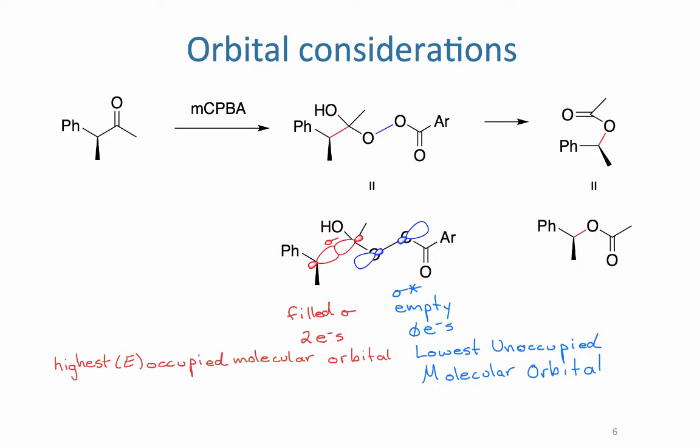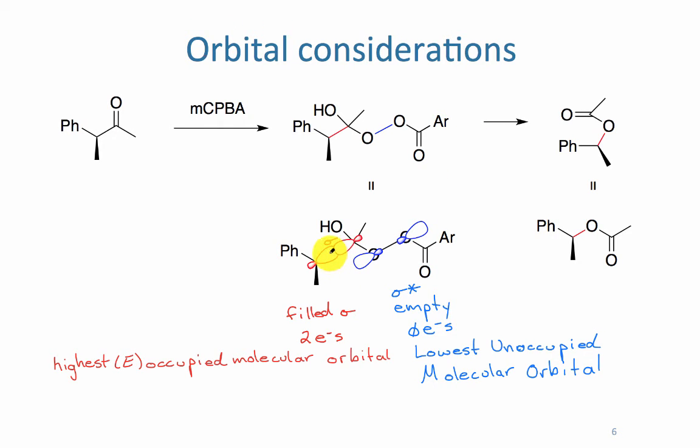So in the transition state of this reaction, the HOMO and the LUMO will overlap, they'll line up, so that the electrons can go from the filled orbital into the empty orbital to form a new bond. Notice in a line drawing that these bonds are parallel.